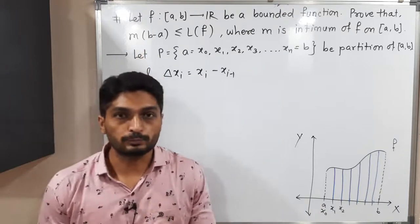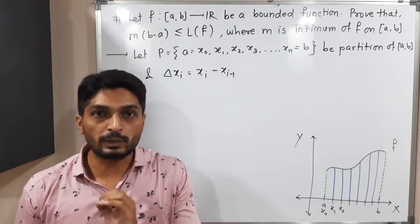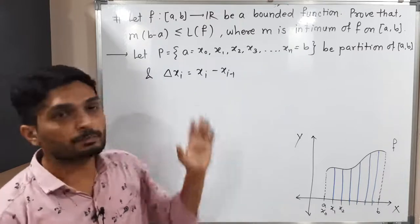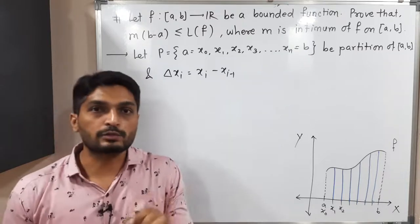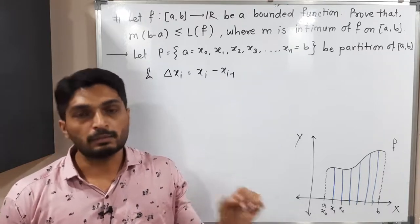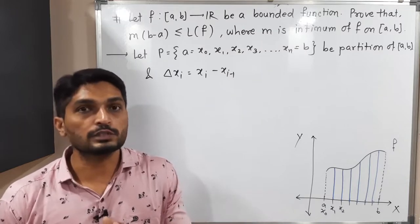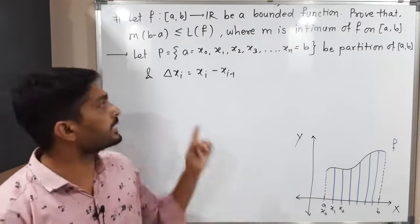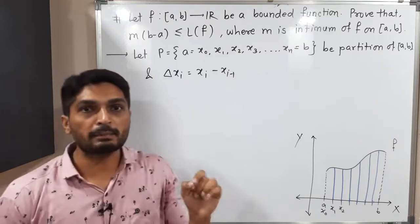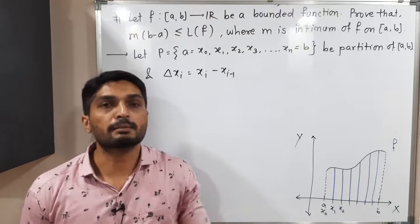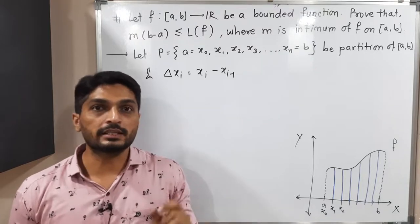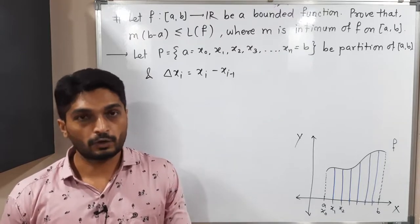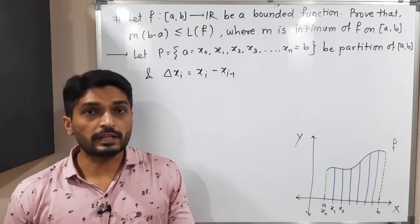First, we consider a partition P = {x₀, x₁, ..., xₙ} of the closed interval [a, b]. Here, Δxᵢ means xᵢ minus xᵢ₋₁, which denotes the length of each sub-interval.